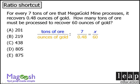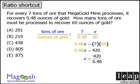To solve this equation, we'll first cross multiply. We can then simplify the right hand side to be 420. At this point we'll divide both sides by 0.48 to get the following.